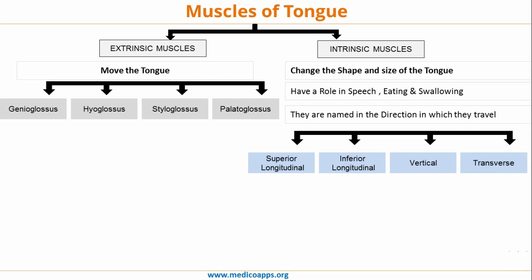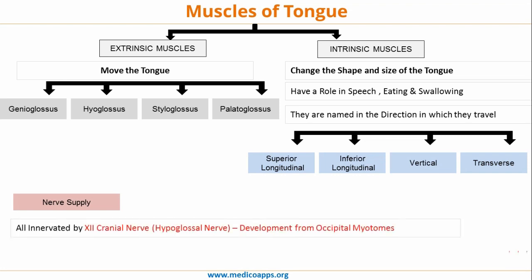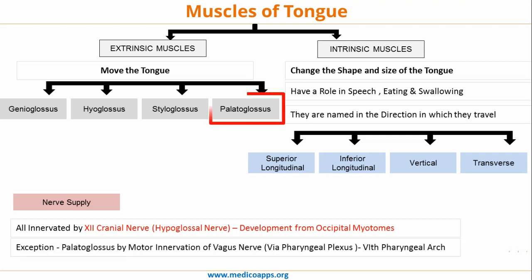Before we move and see in detail about their origin, insertion and action, let's look at the nerve supply of these muscles. All the intrinsic as well as extrinsic muscles of tongue are innervated by the 12th cranial nerve, that is the hypoglossal nerve, and all of them are developed from the occipital myotomes. The only exception is the palatoglossus muscle.